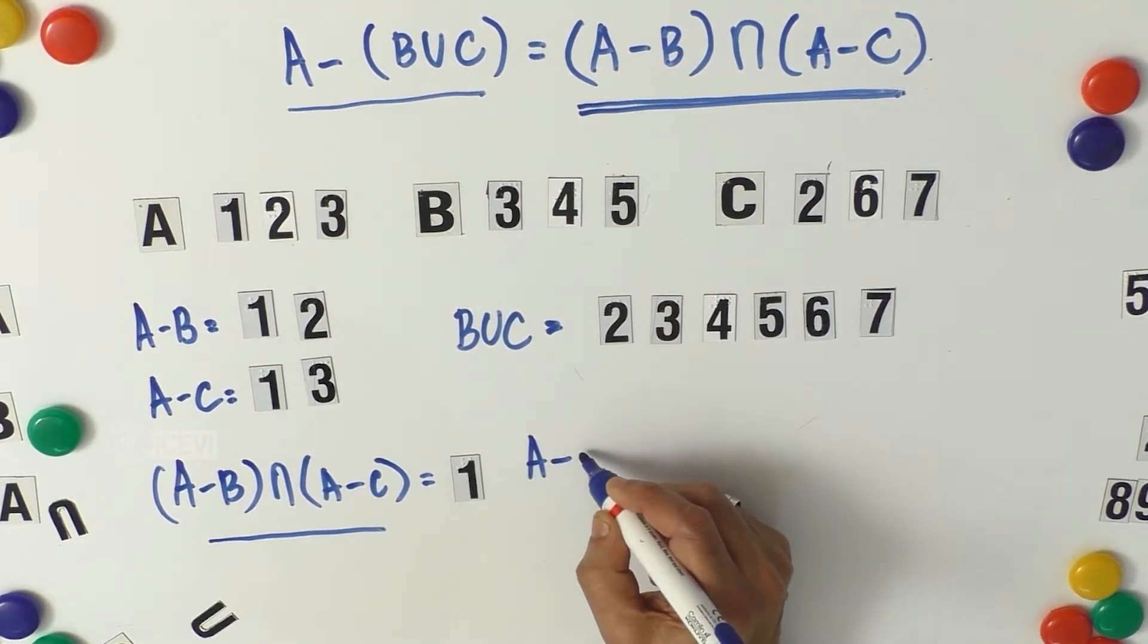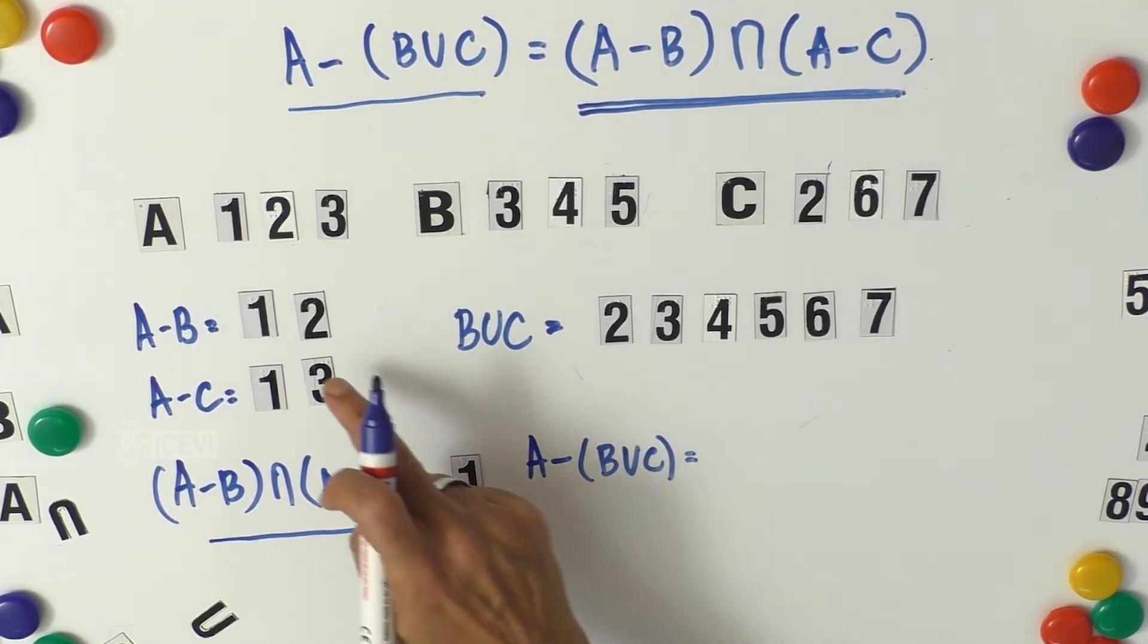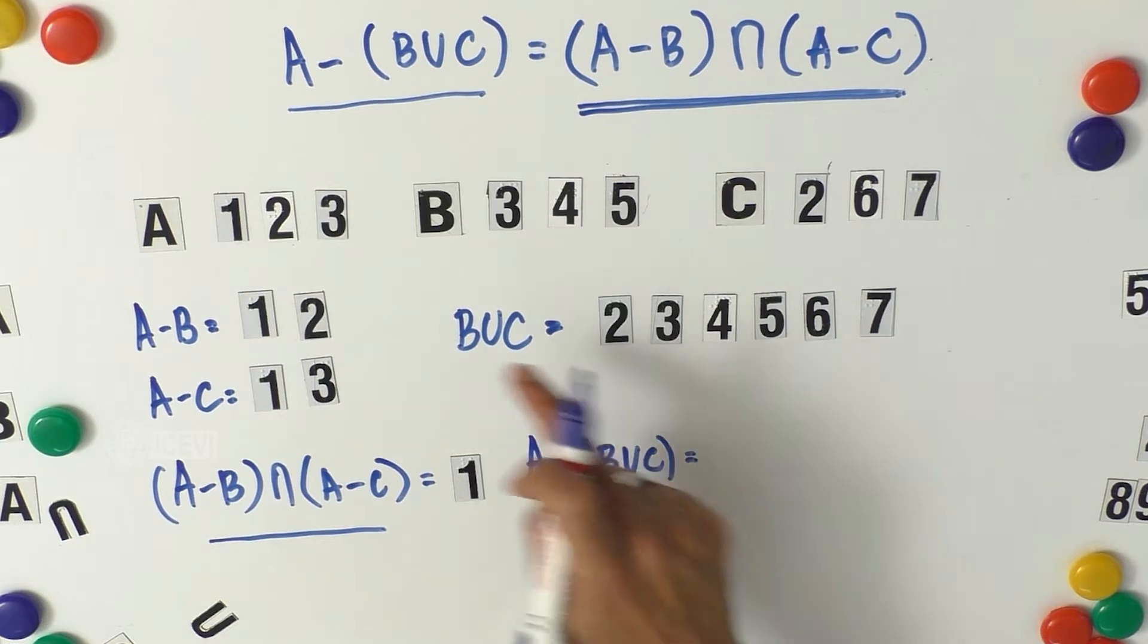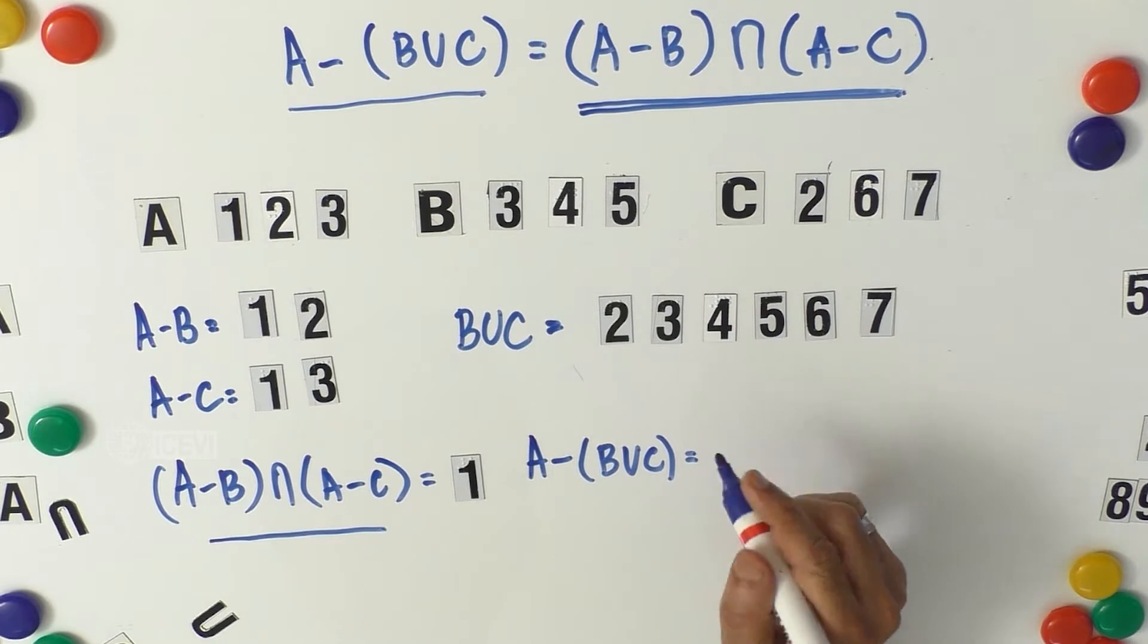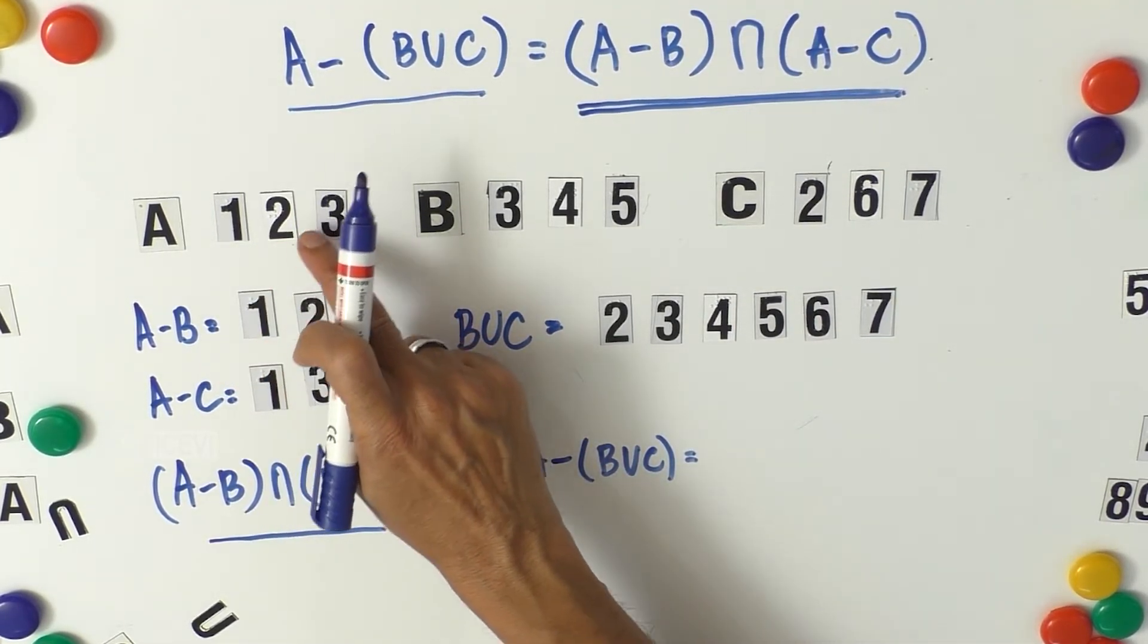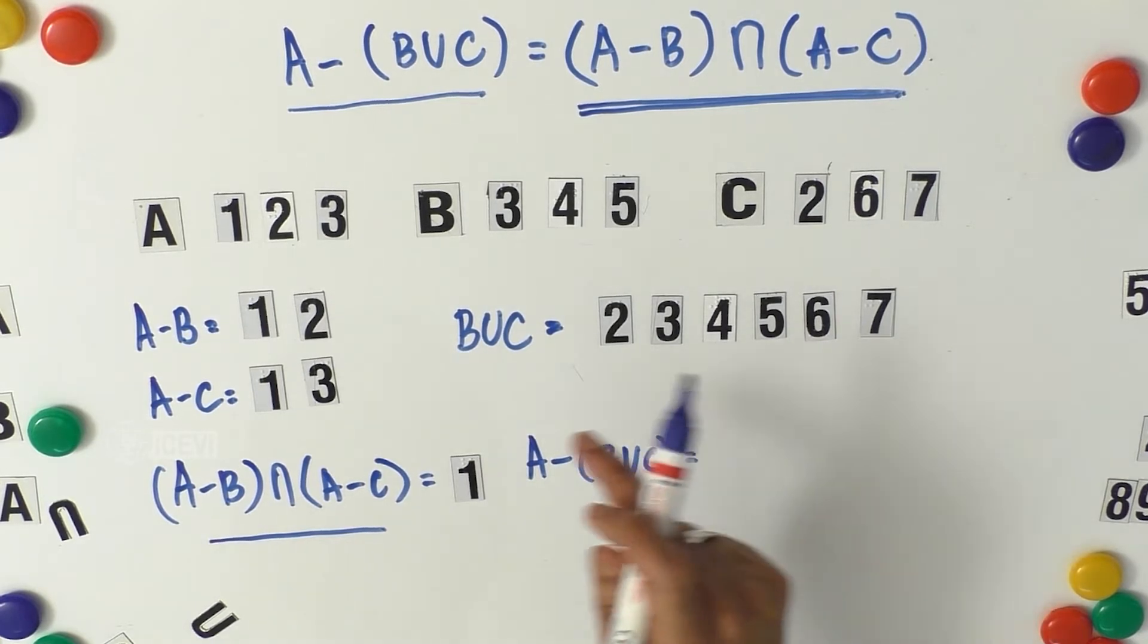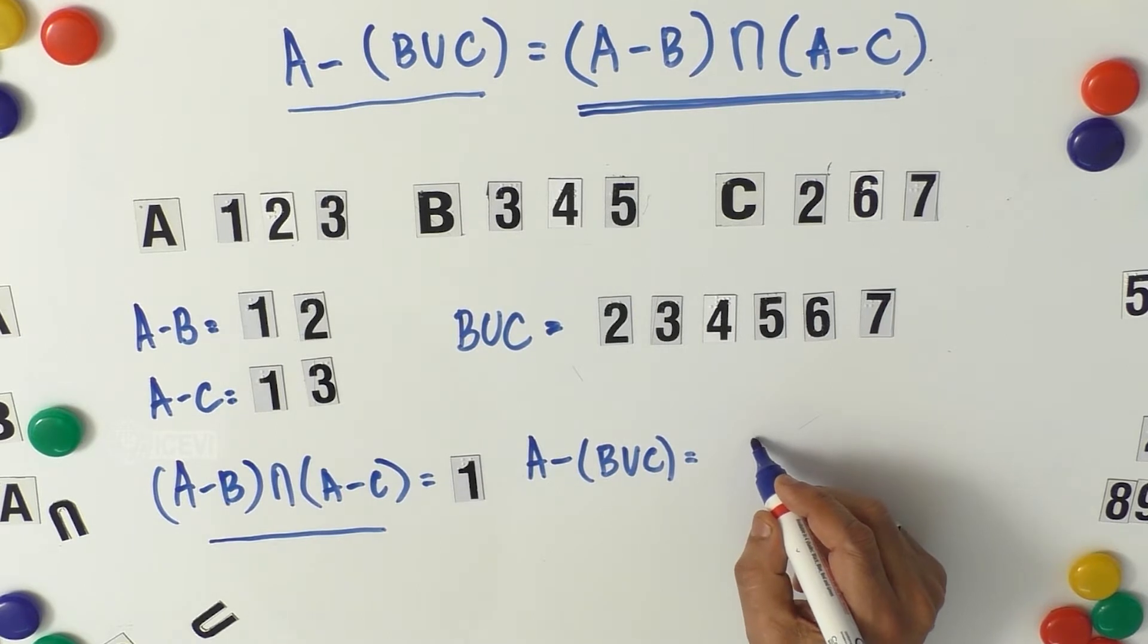Now what is to be found now? We have to find out A minus B union C. What is that? The objects of A which are not in B union C. The elements of A which are not found in B union C. Now what are the elements 1, 2, 3? You have 2, 3 of set A found in set B union C. So what is not found? It is only the element 1.